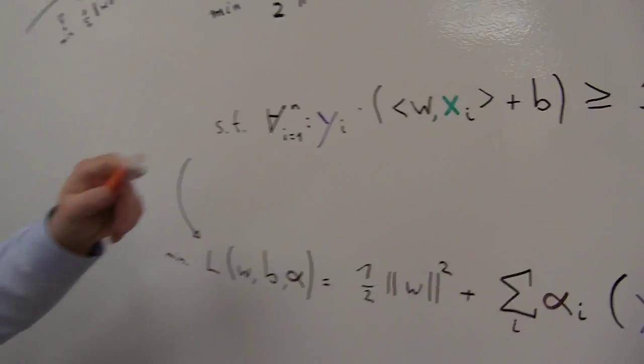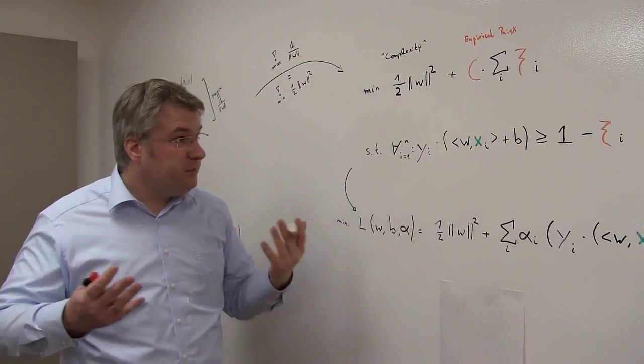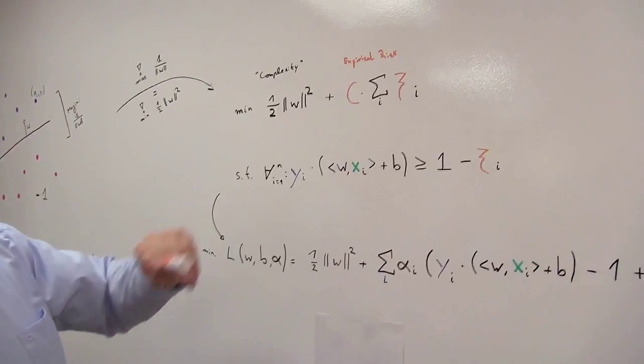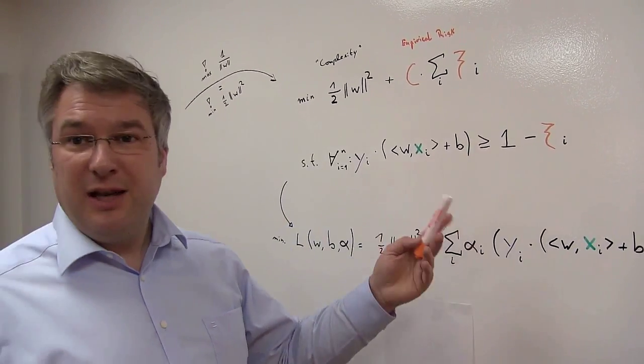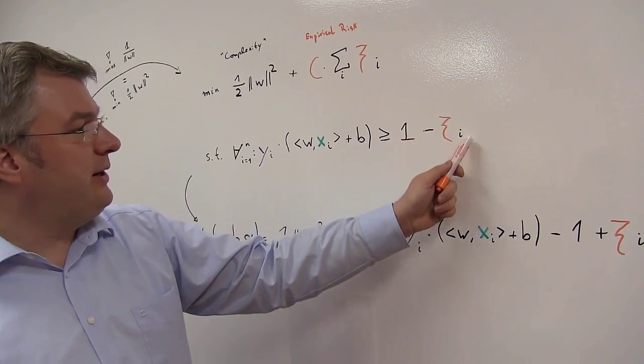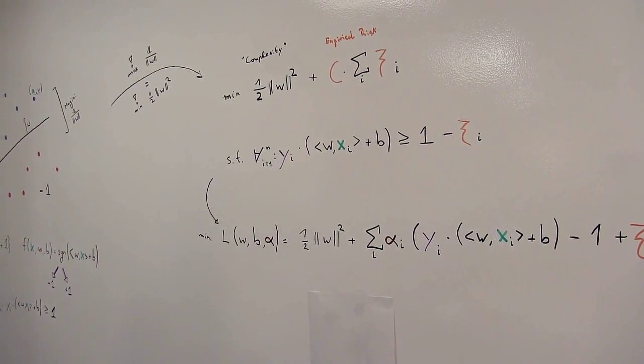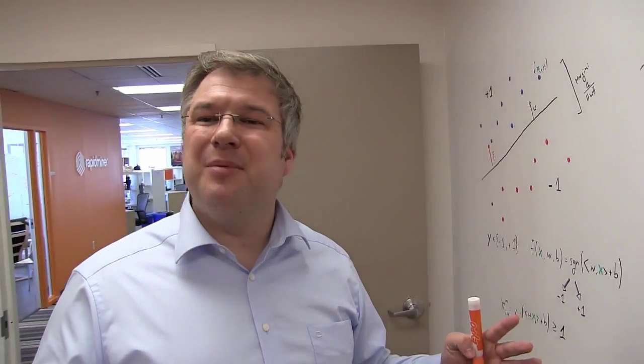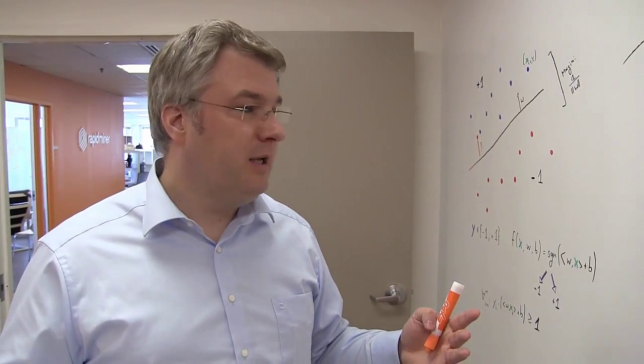So since those two things are conflicting, we need to introduce this parameter we call this tradeoff parameter c to actually make this tradeoff between complexity and risk. At the same time, since we lower now a little bit of slack, we subtract this chi here for all those constraints. Now it's getting a little bit more complex. I think it was rather easy so far. Would you agree? I would agree.